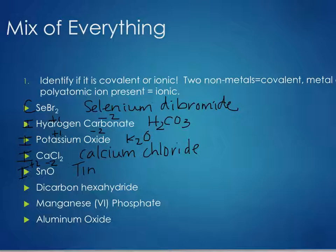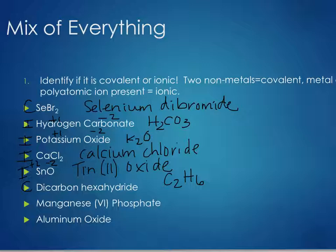For dicarbon hexahydride: the prefixes tell you it's covalent — C₂H₆. For manganese(VI) phosphate: Roman numerals are a big indicator you're dealing with ions. Manganese has a plus six charge; phosphate has a minus three charge. To balance: two phosphates give minus six, one manganese gives plus six — so Mn(PO₄)... actually Mn₂(PO₄)₂ simplifies. Wait — plus six manganese and minus three phosphate: Mn₂(PO₄)... the formula works out to Mn₂(PO₄)₂. Then aluminum oxide: aluminum is a metal (plus three), oxygen is a nonmetal (minus two) — ionic, a three-two combination needing a total charge of six: Al₂O₃.